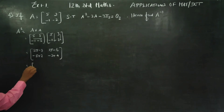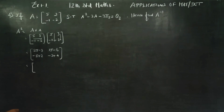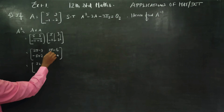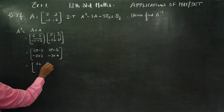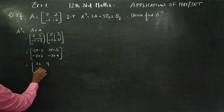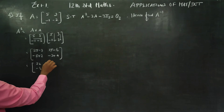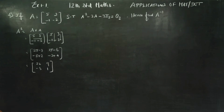If you simplify it, you will be getting 22, 9, -3, 1. This is your A².